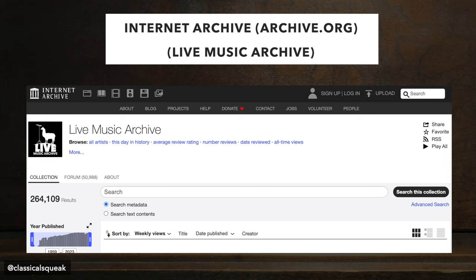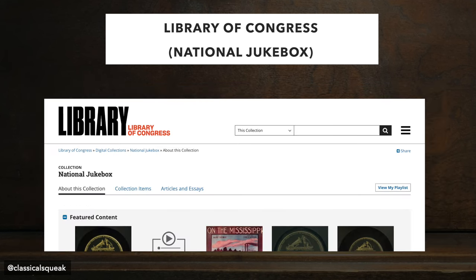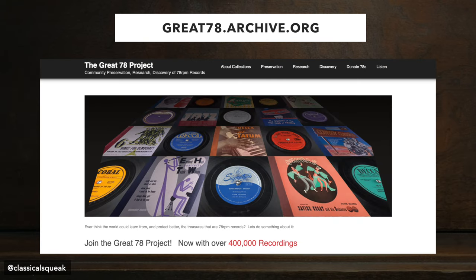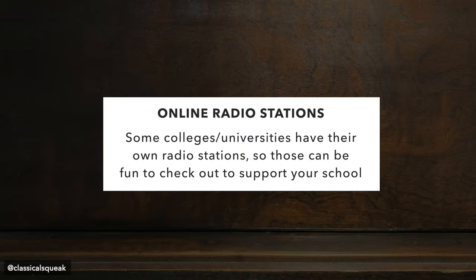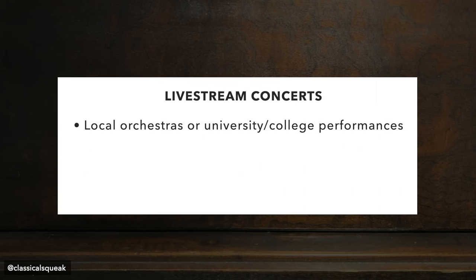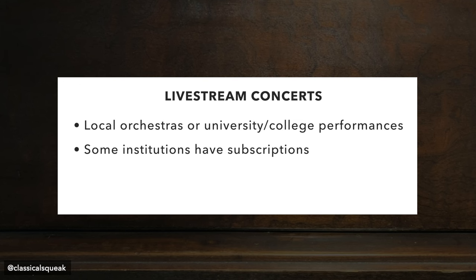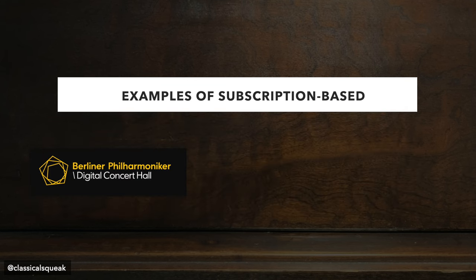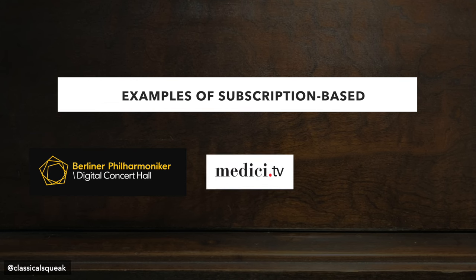For recordings, the Internet Archive has books and a live music archive. The Library of Congress has the National Jukebox, which has historical sound recordings. Naxos Music Library has a huge collection of recordings, which a lot of local libraries have access to along with all the institutions. The Great 78 Project is a community project for the preservation, research, and discovery of 78 RPM records with over 400,000 recordings — you can find it at great78.archive.org. You can also listen to online radio stations with playlists; some universities have their own radio stations as well. To watch recordings of live concerts, your local orchestras might have free live stream performances. Some are subscription-based, some allow you to watch on the day or a few days after and then lock the videos. Some examples are the Digital Concert Hall (Berlin Philharmonic), Medici.tv, or the Met Opera On Demand.